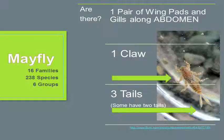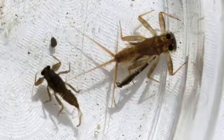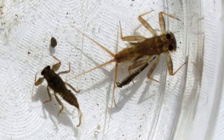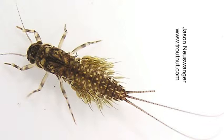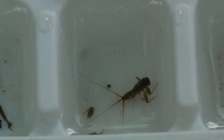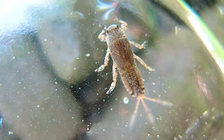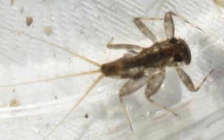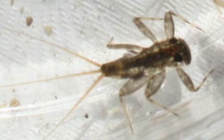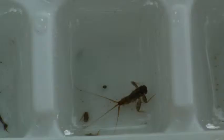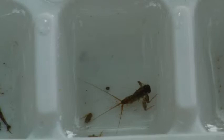The next group is mayflies. We've taken 16 families, 238 different species in the southeast, and boiled them down into six different groups. In general, these critters are going to have three tails, but remember that some types of mayflies will have two tails. It's a rough world out there in the aquatic jungle, and sometimes one of these guys can lose a tail — a stonefly may lose a tail too, so the number of tails is not always the best way to figure out what you're looking at. One good rule of thumb: if you have three tails, you're almost certainly looking at a mayfly. If you have two tails, you have some more work to do. Mayflies have one set of claws, one pair of wing pads, and gills on the lower part of their body on the abdomen.